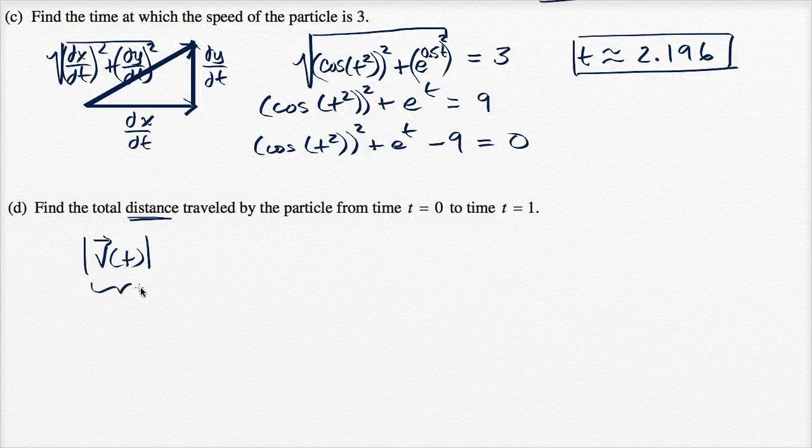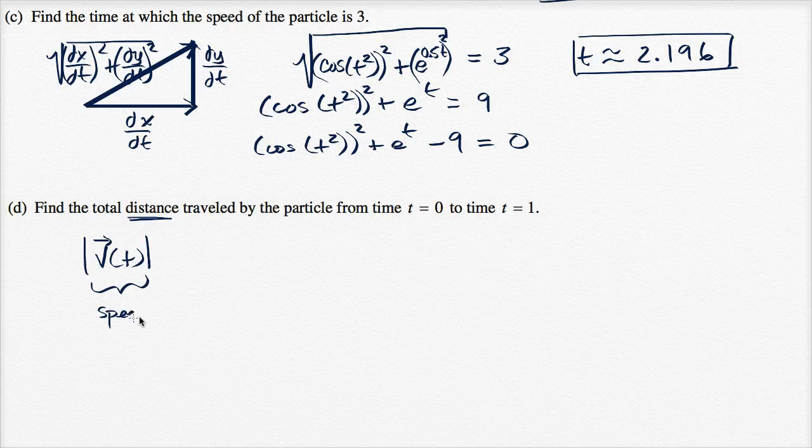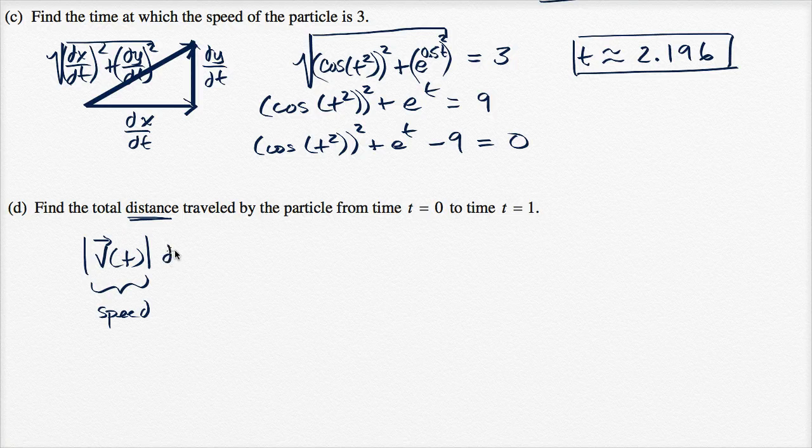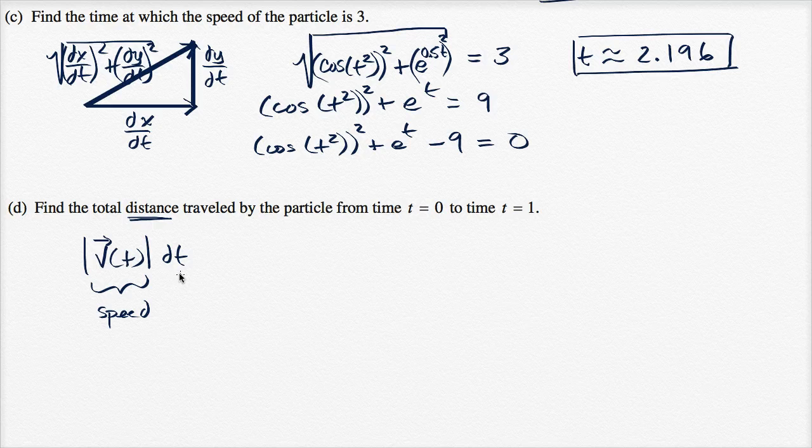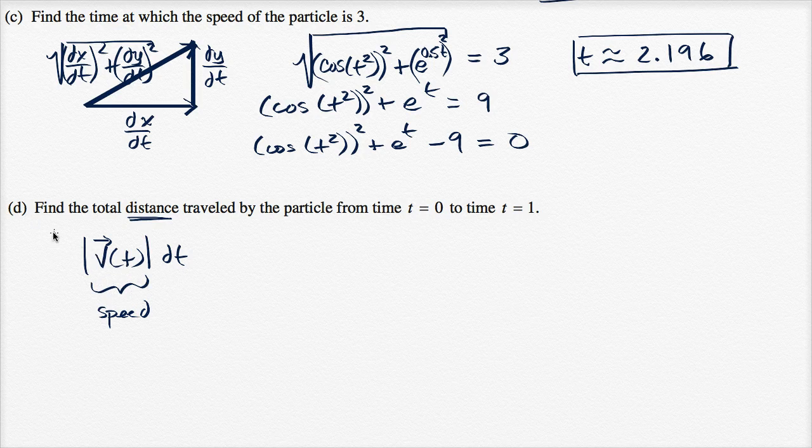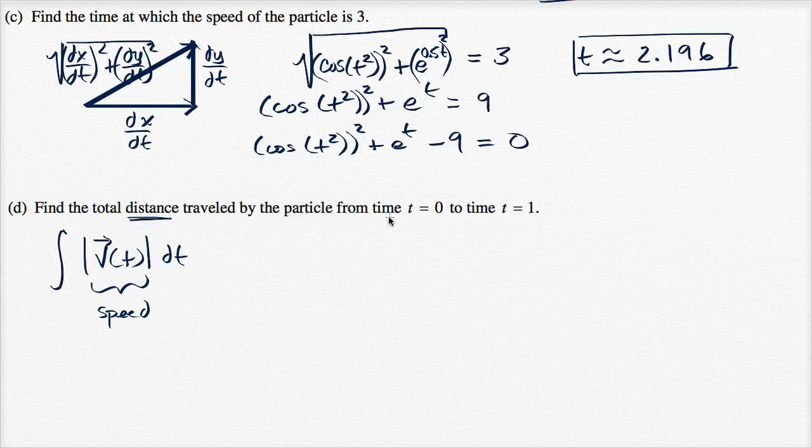If you took your speed, that's your speed right over there. And if you multiplied it by a little small change in time, that's going to give you your infinitesimally small change in distance over that infinitesimally small change in time. And if you wanted to find the total distance over a non-infinitesimal change in time, well then you can integrate. And you can integrate those little changes in time, in this case from t equals zero to t equals one. This is going to be the expression for the total distance.